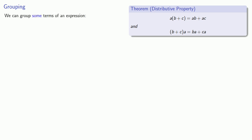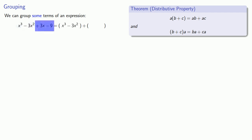The idea is that we can group some of the terms of an expression. In an expression like this, maybe we'll separate the terms into two groups. What goes in each group? Let's try it out. Let's go easy and put the first two terms into the first group, and the last two terms into the second group. If the universe is a kind and gentle place, we might be able to factor the terms in each group.